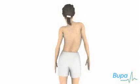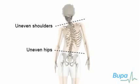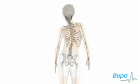If you have scoliosis, you may have one shoulder blade higher than the other, or it may be more prominent. Your hip may also be higher on one side. Here we show one shoulder blade higher than the other and a hip that is higher on one side.